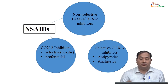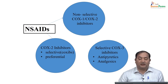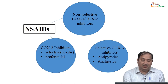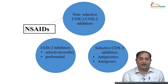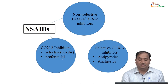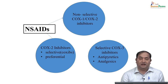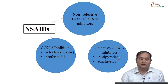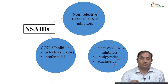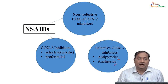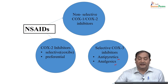To summarize NSAIDs in figures: some are non-selective and act on both COX-1 and COX-2. There are selective COX-2 inhibitors called coxibs — rofecoxib, celecoxib, etoricoxib, valdecoxib, parecoxib — many coxib examples. There are also selective COX-3 inhibitors. COX-3 enzyme is only in the brain, so COX-3 inhibitors act as antipyretics and can also act as analgesics. COX-1 and COX-2 inhibitors can act as antipyretic, analgesic, and anti-inflammatory agents.